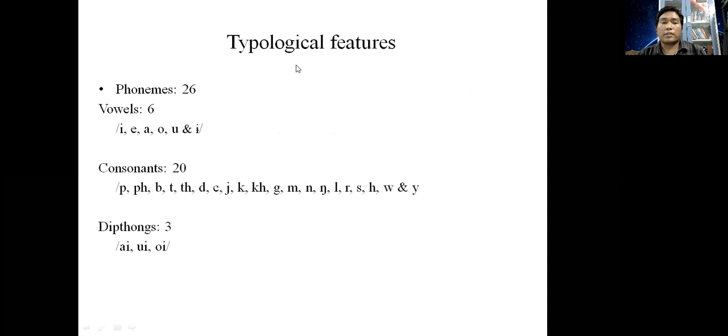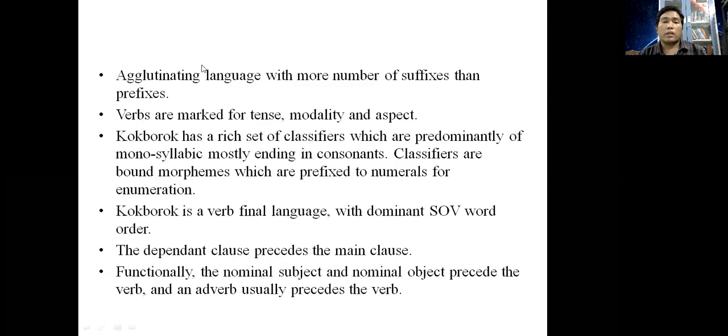Typological features. The phonemic inventory of Kokhbarok consists of 26 phonemes: 6 vowels, 20 consonants, and 3 diphthongs. Kokhbarok is an agglutinating language with more suffixes than prefixes. Verbs are marked for tense, modality, and aspect. Kokhbarok has a rich set of classifiers which are predominantly monosyllabic, mostly ending in consonants. Kokhbarok is a verb-final language with dominant SOV word order. The dependent clause precedes the main clause. Functionally, the nominal subject and nominal object precede the verb, and an adverb usually precedes the verb.